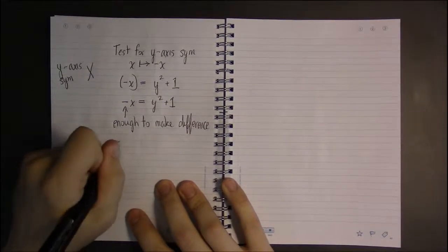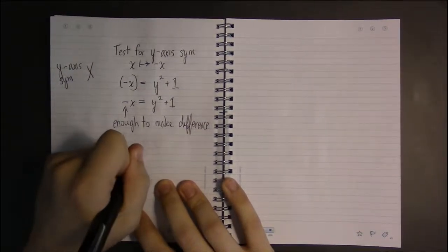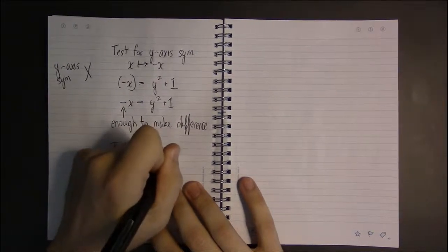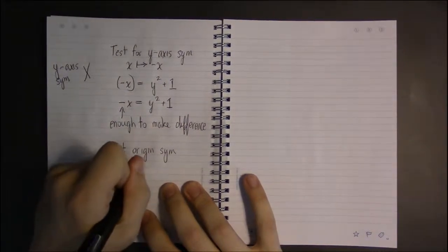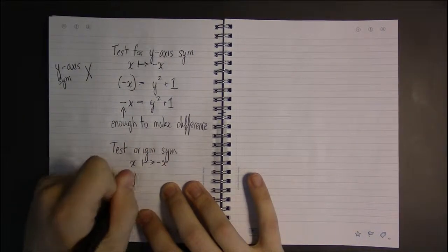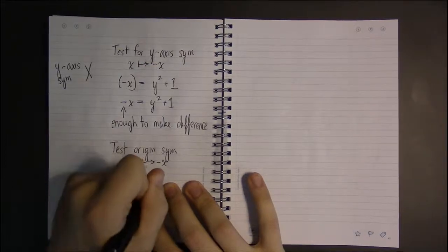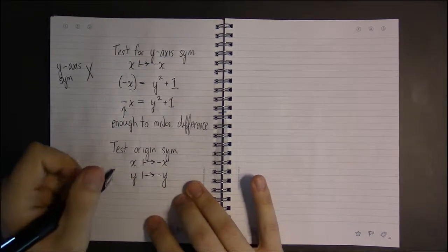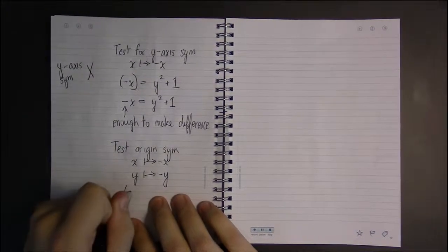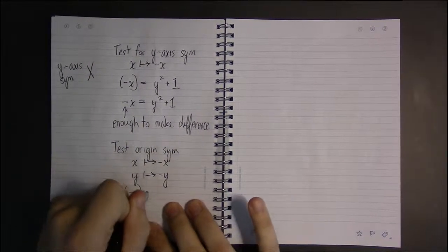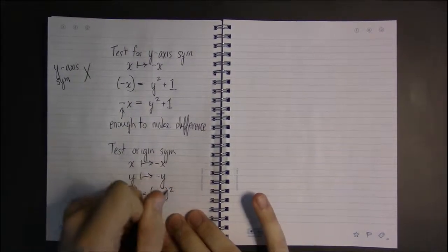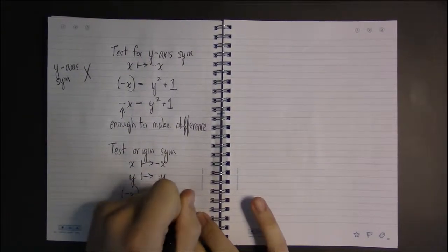To test for origin symmetry, you replace both x with minus x and y with minus y. So I have parentheses minus x equals parentheses minus y, then square it, plus one.